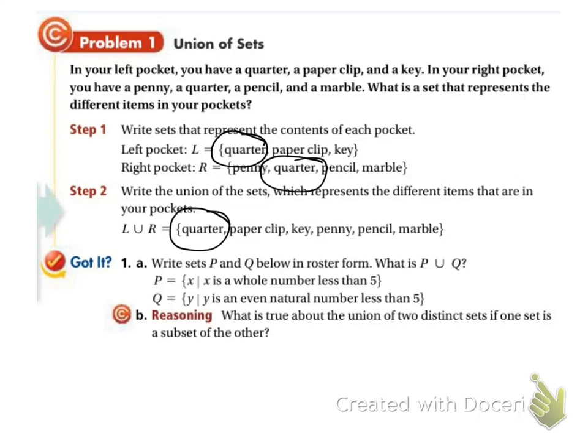So let's try our got it problem. First I want us to write sets P and Q below in roster form. Right? Because right now they're in set builder notation. So, P is equal to, it says X such that X is a whole number less than 5.